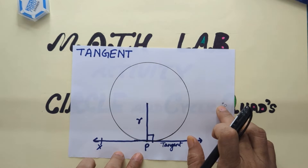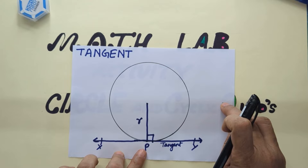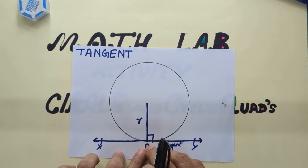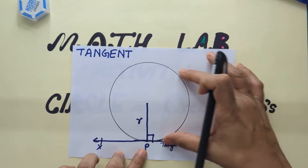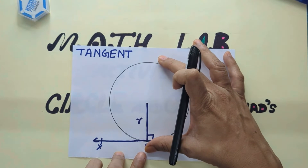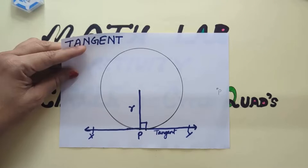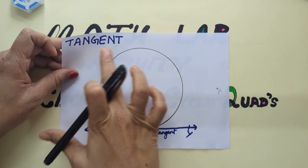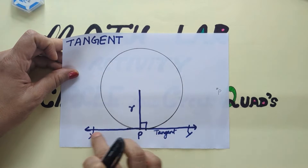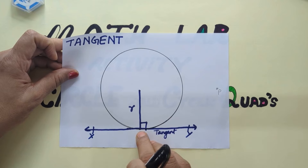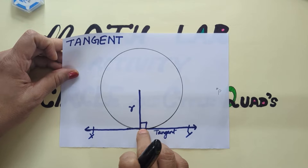From an external point, a minimum of one tangent and a maximum of two tangents can be drawn to the circle. To begin with the properties of tangents to a circle: the radius and tangent at the point of contact are perpendicular to each other.